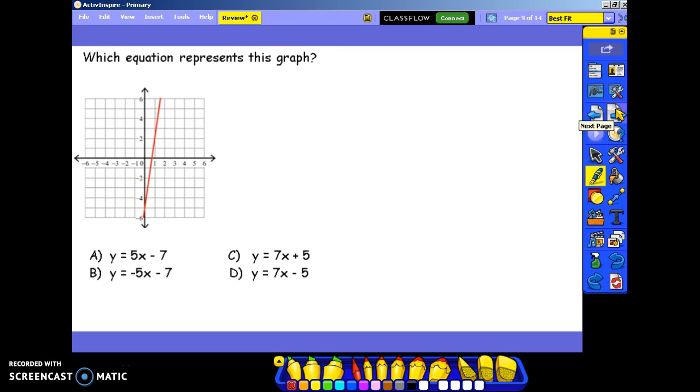Which equation represents the graph? Well, we know automatically it can't be b, because we have a positive slope. Our graph passes through the y-axis at negative 5, which is only d, but let's check the slope to make sure we're correct. We're going up 1, 2, 3, 4, 5, 6, 7 to the right 1, which means my slope is 7, so my answer is d.